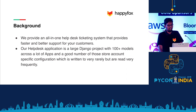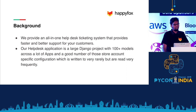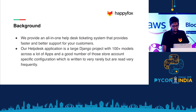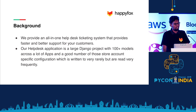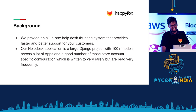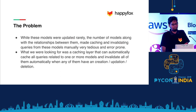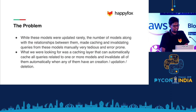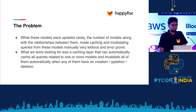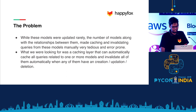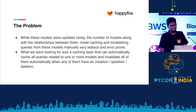Our application has a lot of Django models — more than 100 models. A good number of these models are account configurations. Our product is extremely customizable by the users, so a lot of the time we just have to record stuff in databases that are updated very rarely but read in almost every request. So what we were looking for was a way to easily cache and invalidate all of these models as and when some change happens.